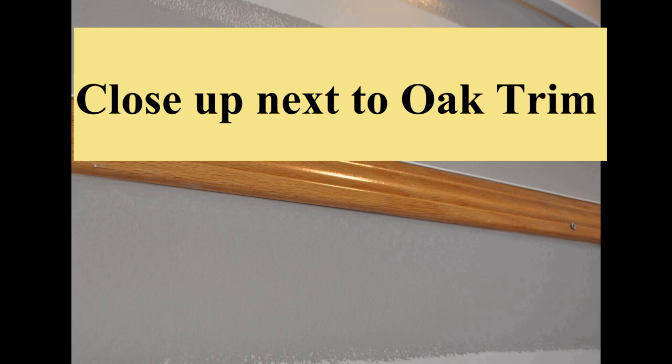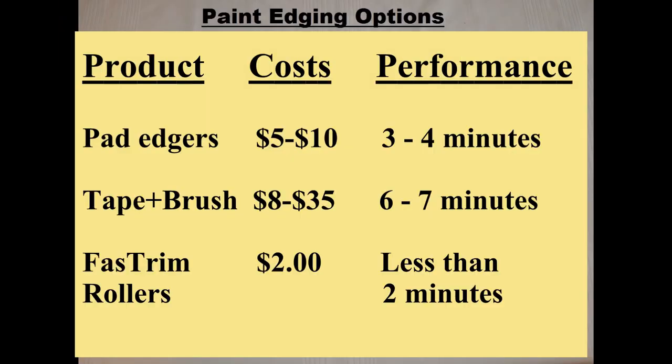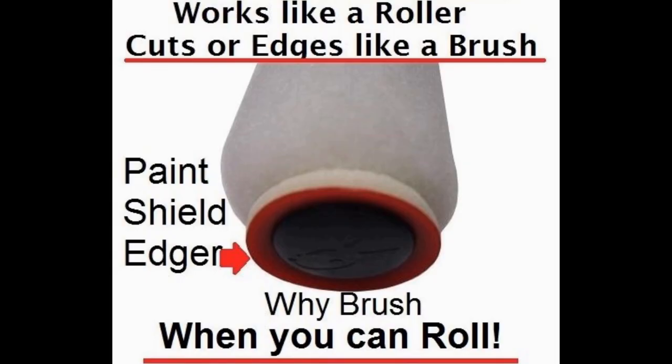In reviewing the options, a detailed analysis will show paint edges can cost 5 to 10 dollars and take 3 to 4 minutes and don't work on quarter inch wide trim edges. Tape and brush costs will vary 8 dollars to 35 dollars and could take 6 to 7 minutes or longer. Fast trim edging rollers cost 2 dollars and take approximately 80 seconds.